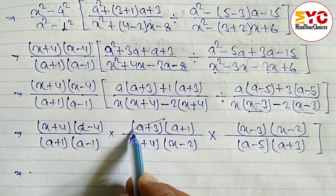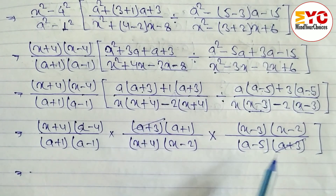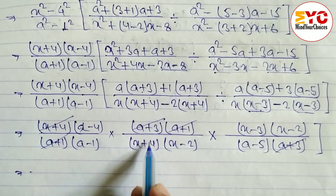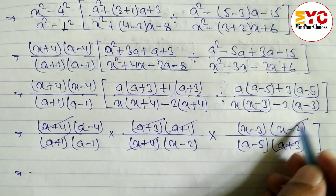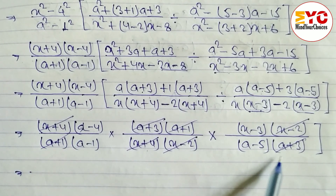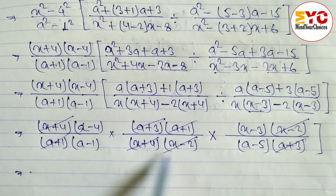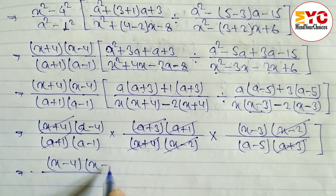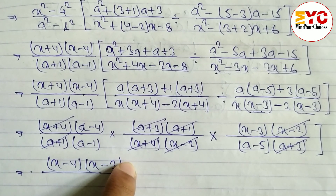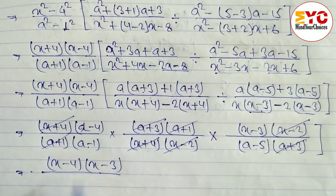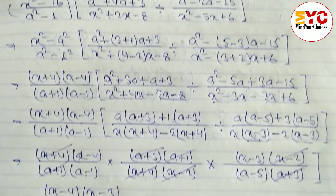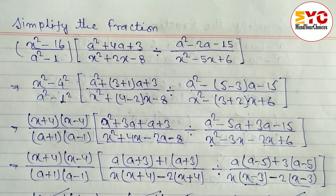Now we reduce like terms in the numerator and denominator. We cancel a plus 3 with a plus 3, then a plus 1 with a plus 1, then x plus 4 with x plus 4, and x minus 2 with x minus 2. The terms x minus 4 and x minus 3 have no matching pairs, so they remain. The final answer is x minus 4 times x minus 3, divided by a minus 1 times a minus 5.